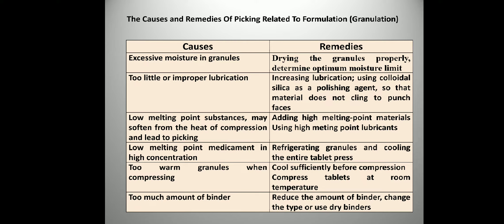Low melting point medicaments in high concentration can also cause peaking — refrigerating granules, cooling the entire tablet press, and carrying out tableting at low temperature can reduce it. If granules are too warm during compression — sometimes due to time constraints compression begins before granules are properly cooled — the granules should be sufficiently cooled before compression and the process should be carried out at room temperature. Too much binder can also cause peaking — reducing the binder to optimum concentration is the remedy.